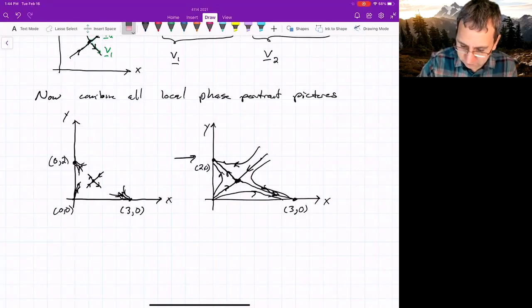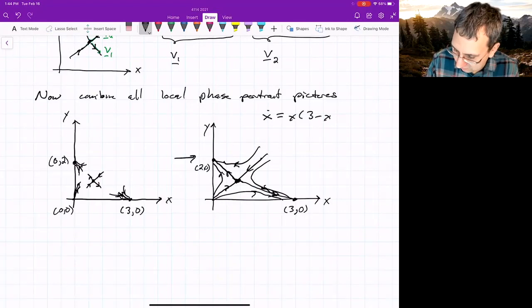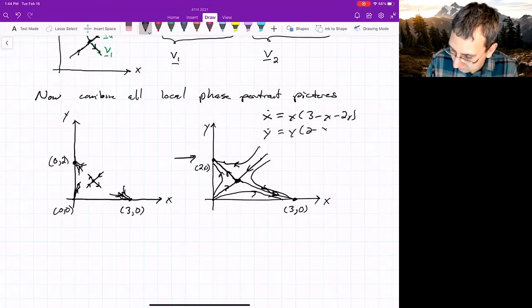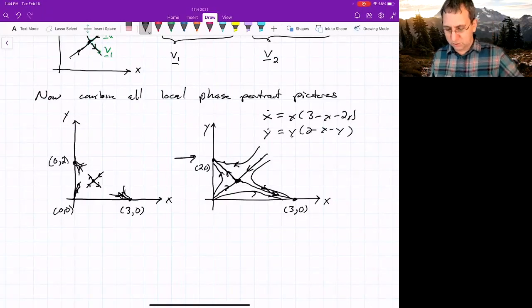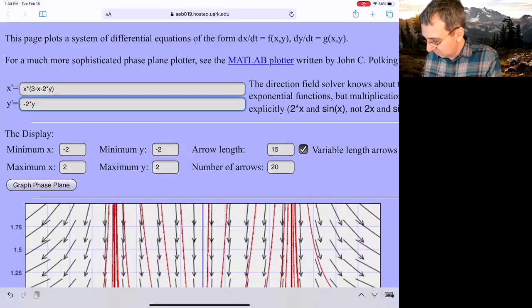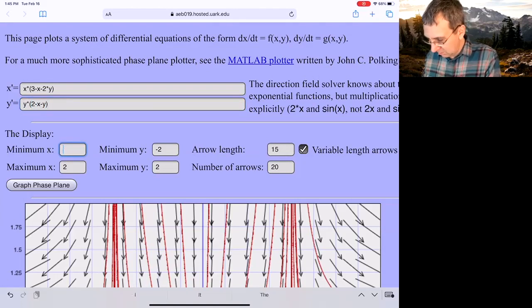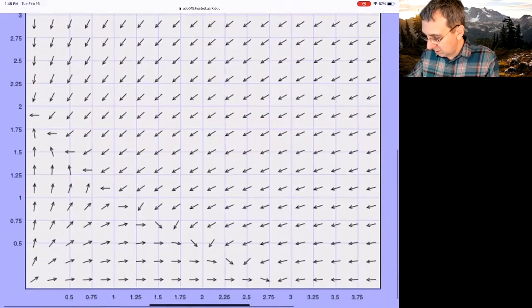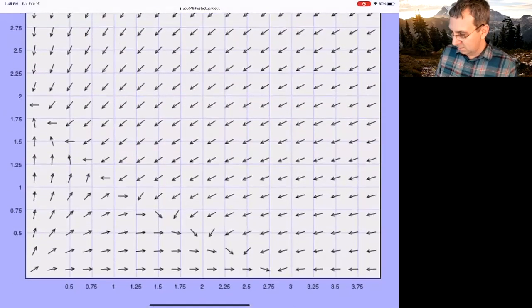Let me remind ourselves what this ODE was. X dot is X(3 - X - 2Y). And then the other one was Y dot is Y(2 - X - Y). You might wonder, how did these special directions all combine? How does that happen? And let's make it go from the minimum x is 0, minimum y is 0. And then we'll go to just 4, 4.